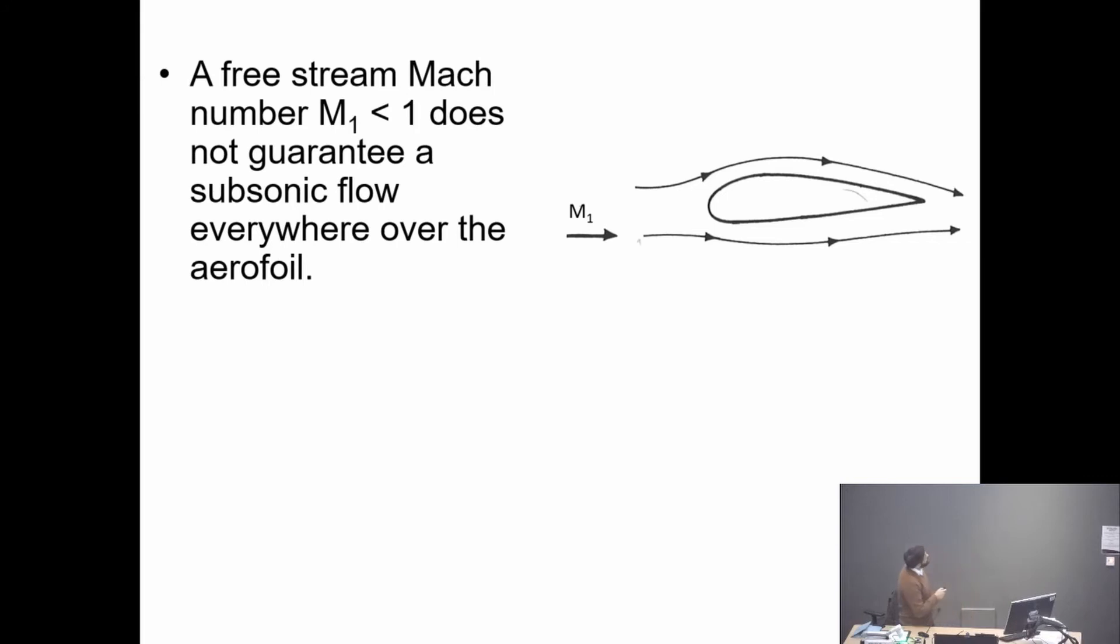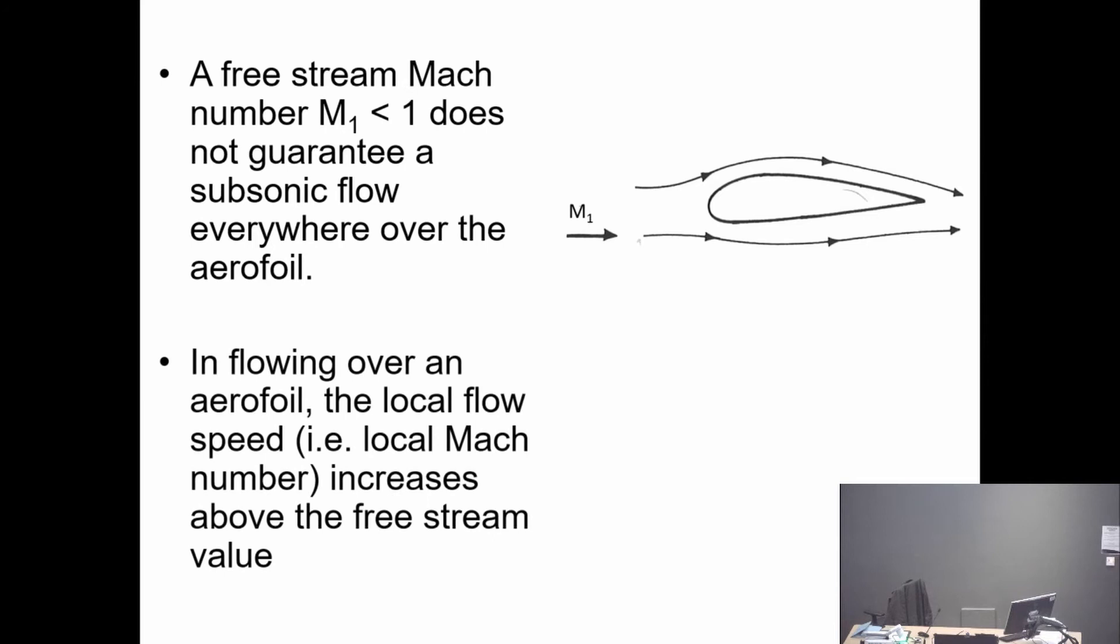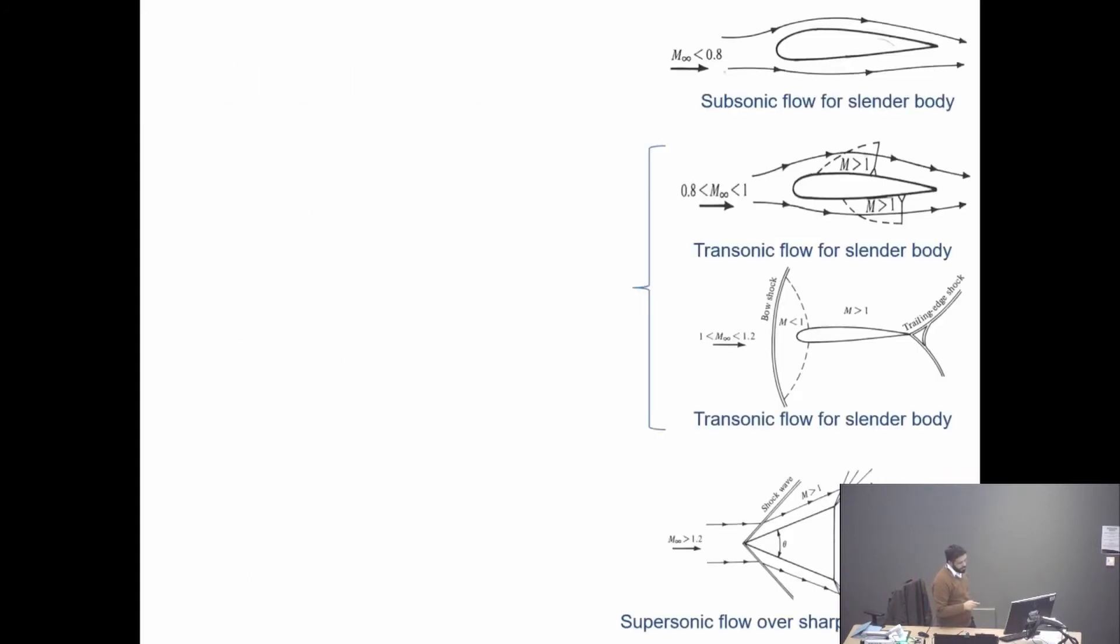If I have a typical subsonic airfoil section and the free stream Mach number is subsonic, the fact that the free stream Mach number is subsonic doesn't mean it will be subsonic everywhere. There could be some regions, particularly on the top surface, that become suddenly supersonic or locally supersonic.